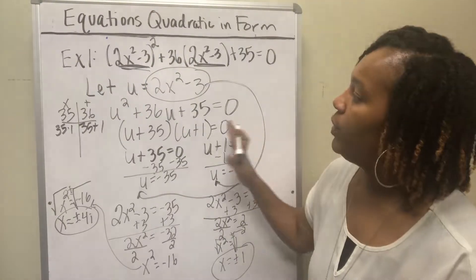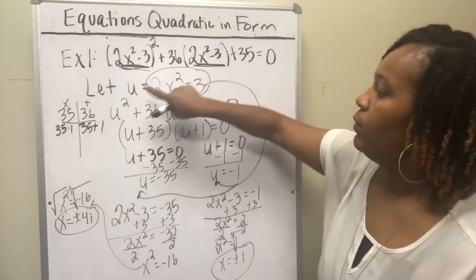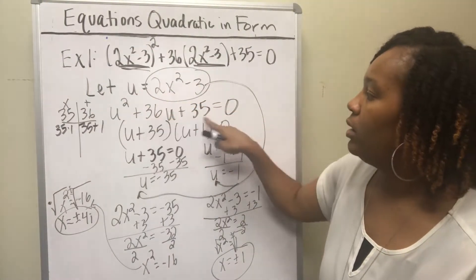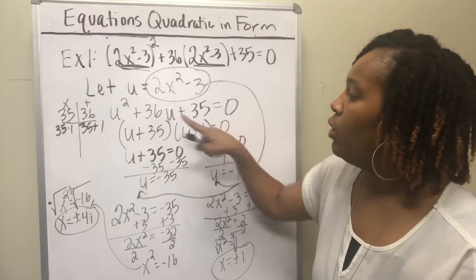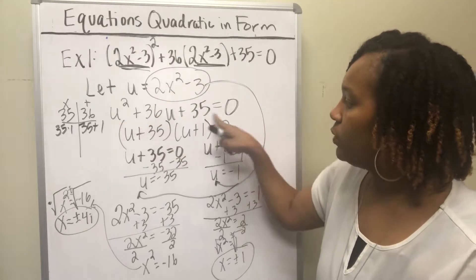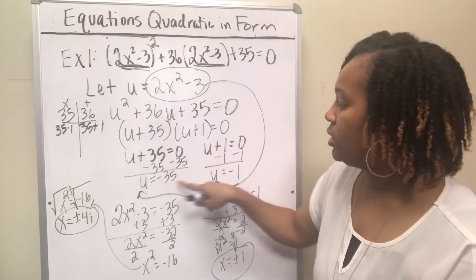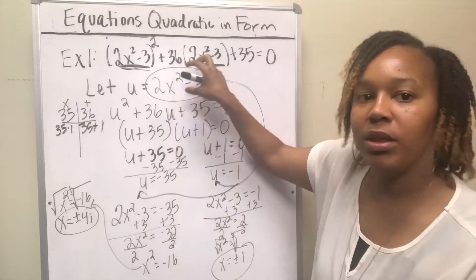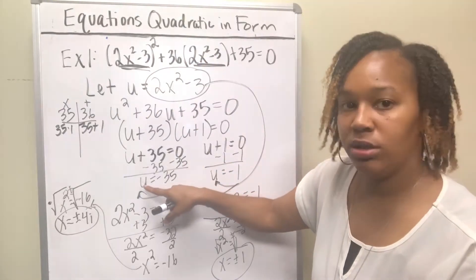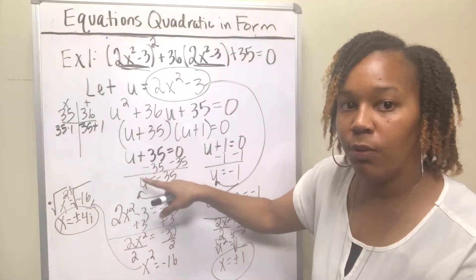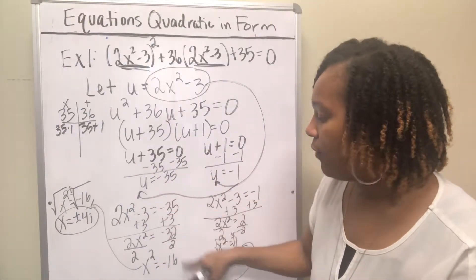Again, what do we do? We replace the extra stuff with u so that we can make it look like a quadratic equation. We solve the quadratic equation. Once we solve for u, we have to go back and put x back in the equation — replace u with what we let it equal — and then solve for x.